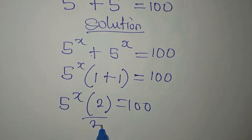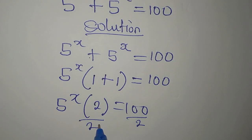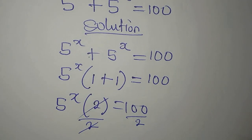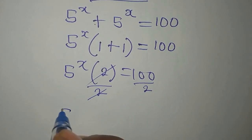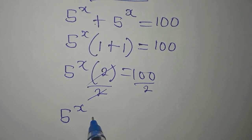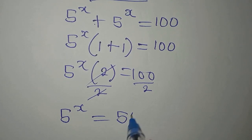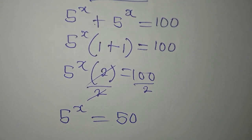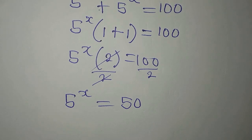Since we are multiplying, we can divide by 2. This will cancel, and now we have 5 to the power of x equal to 50, because 100 divided by 2 is 50.